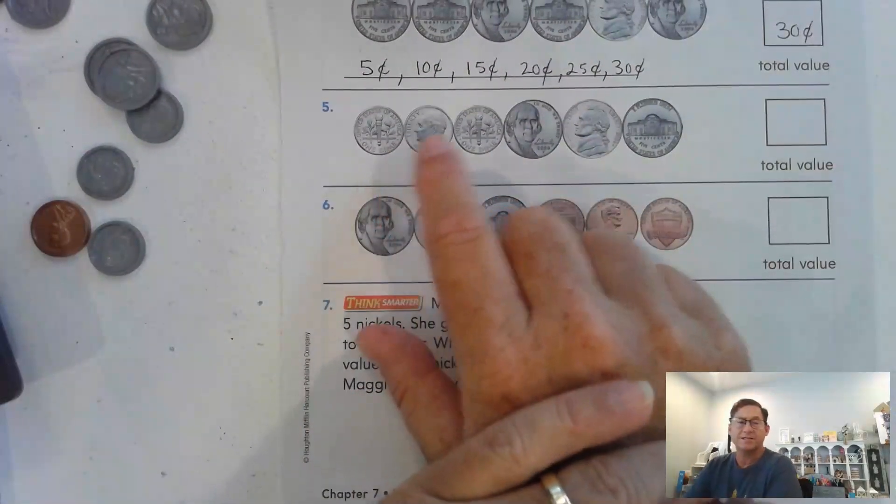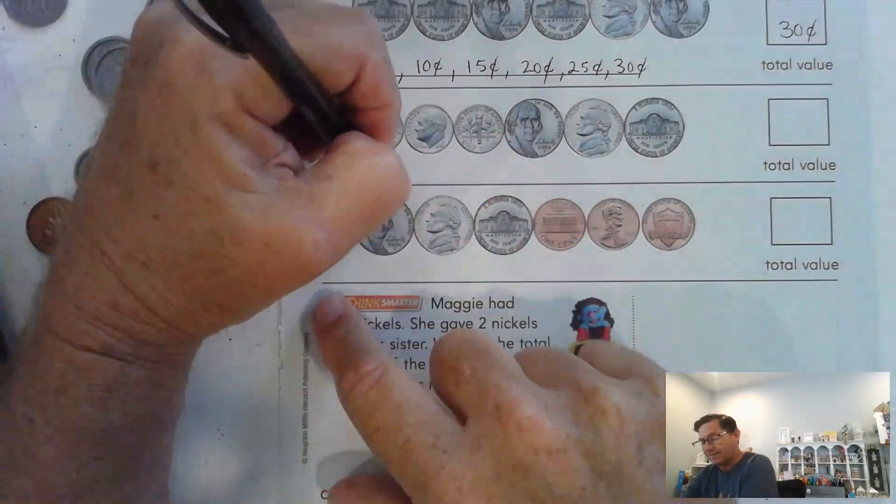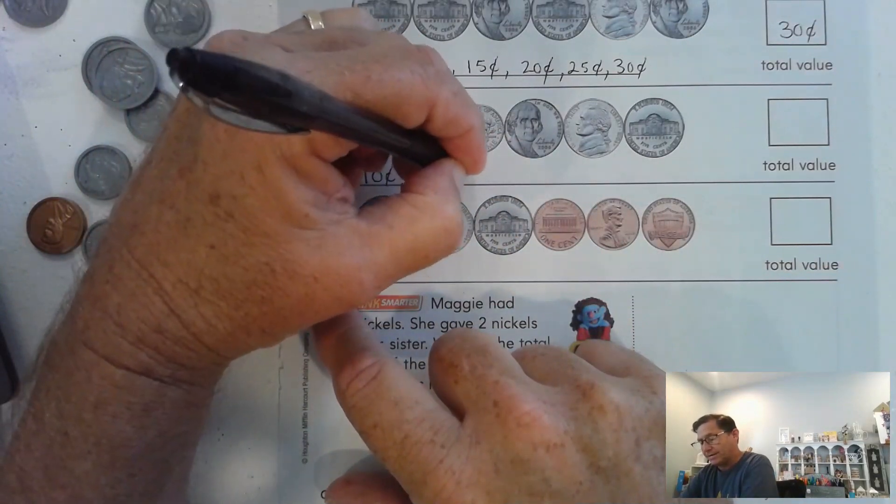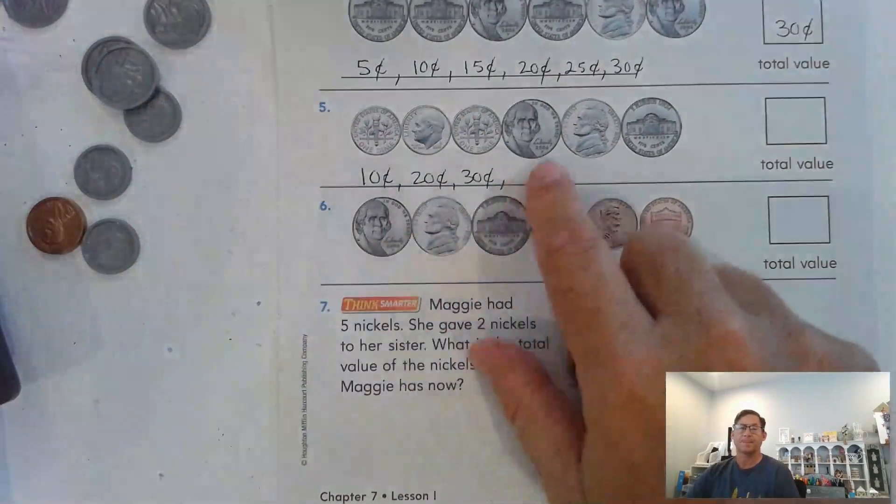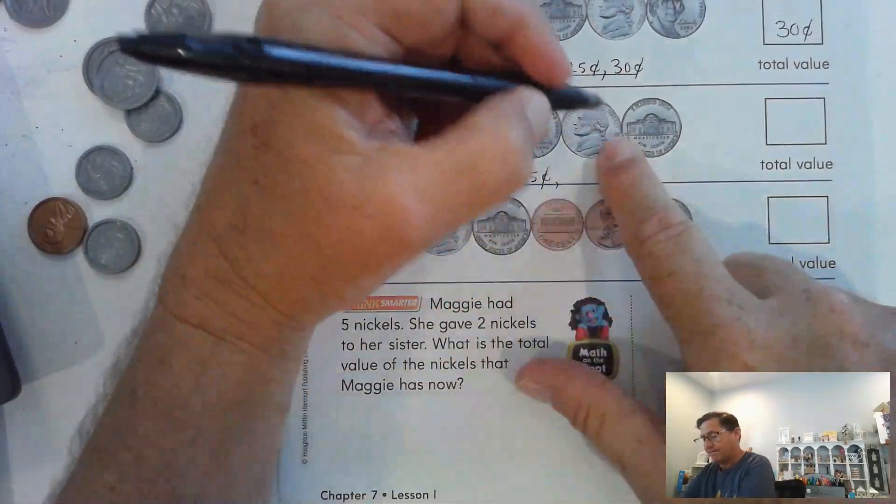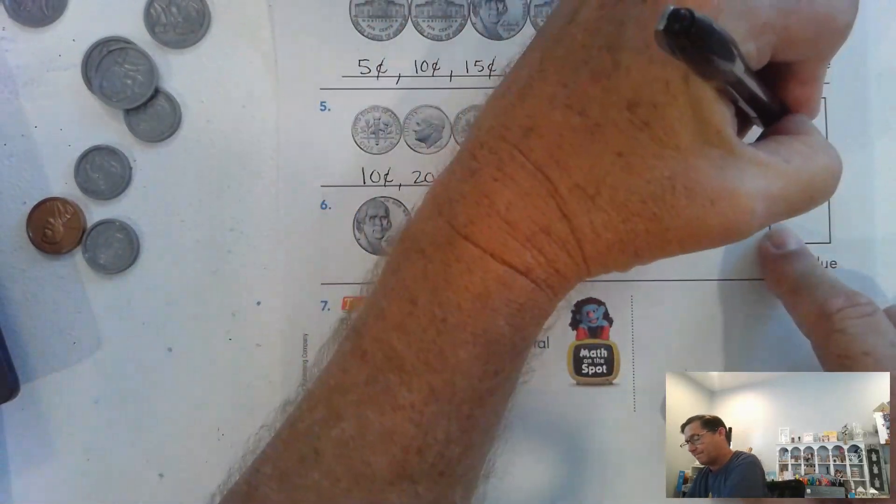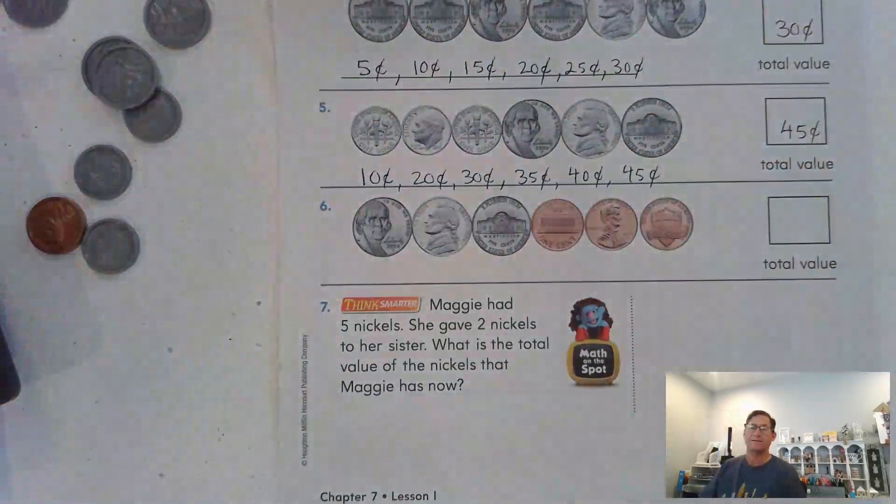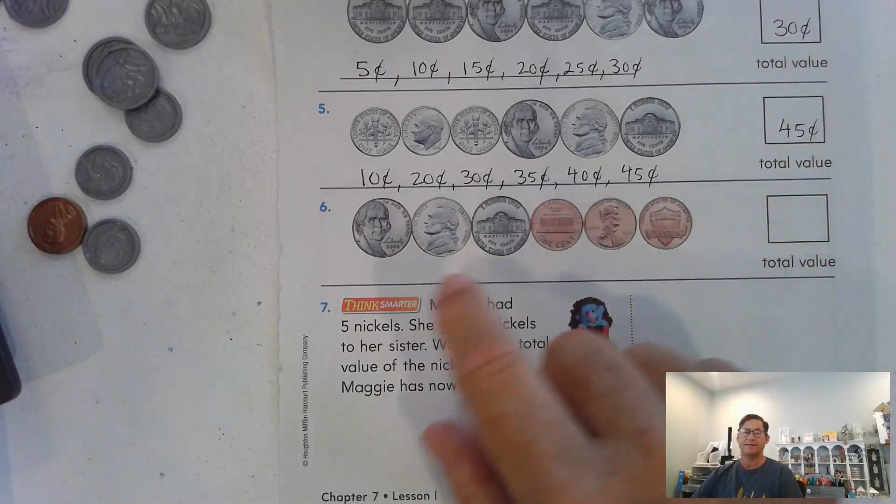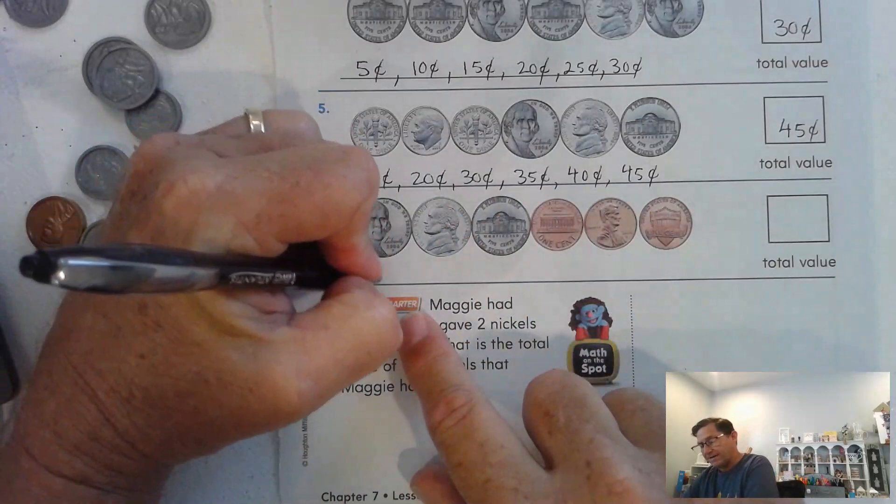Number five, we have a combination of dimes and nickels. We're going to start with the dimes: 10, 20, 30, 35, 40, 45 cents. In number six, we have nickels and pennies: 5, 10, 15, then we count by ones.